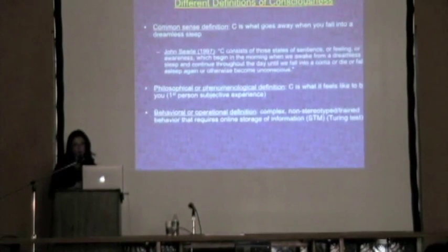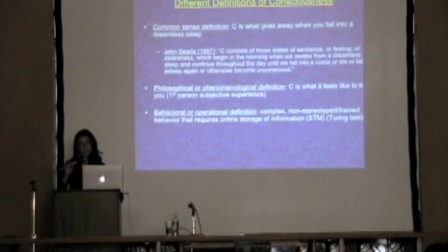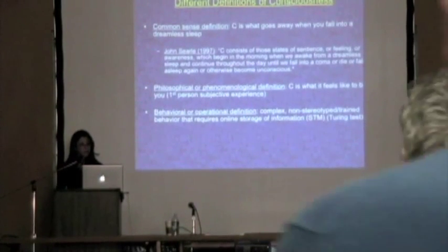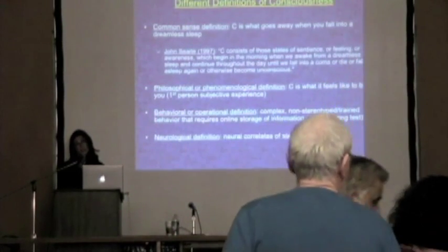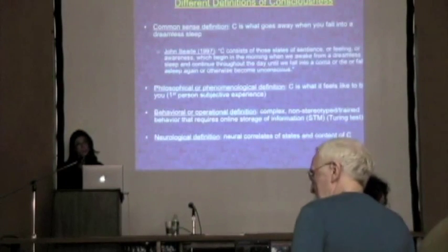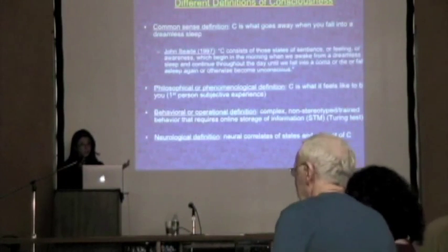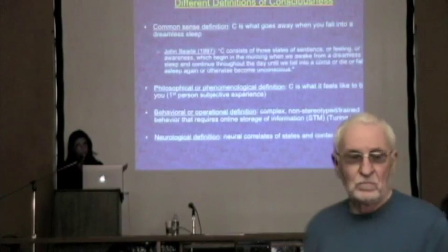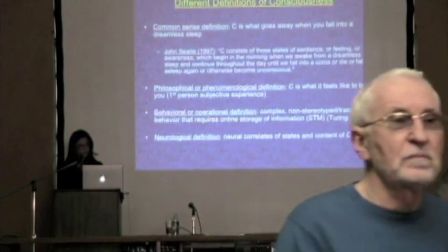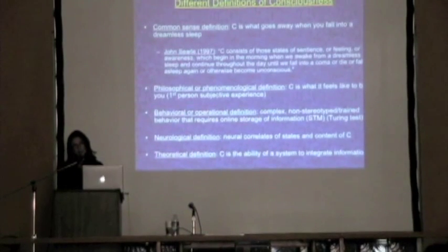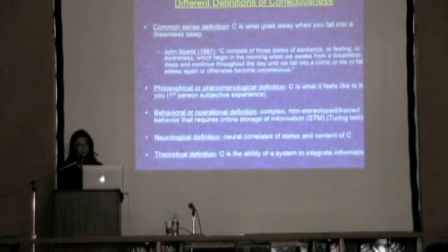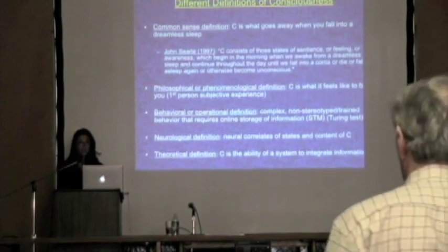Some try to make a behavioral or operational definition of consciousness — simply complex, non-stereotyped behaviors that require working short-term memory. Then there's a neurological definition where people say consciousness is the neurological correlates of consciousness, which kind of skirts around the issue of definition. And more recently, which I'll talk about at the end, some people are coming up with theoretical definitions of consciousness — for example, it's a system's ability to integrate information.